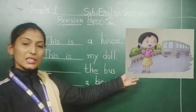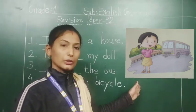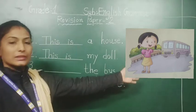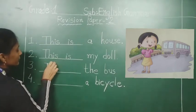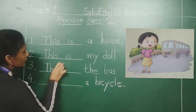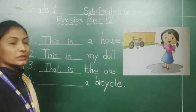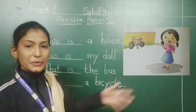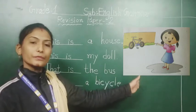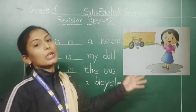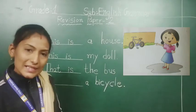See this picture — the bus is far from her, so we write: That is a bus. Now see this picture — a bicycle is far from her, so we will write here: That is a bicycle.